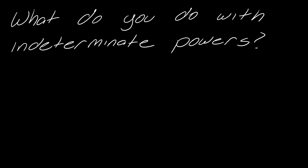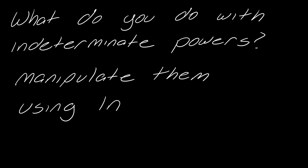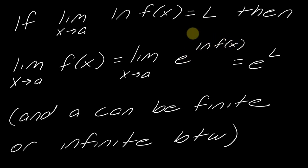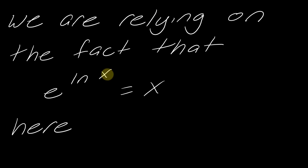For indeterminate powers, you must manipulate using the natural log. The idea is: if the limit as x approaches a of f(x) is L taken after applying ln, then the actual limit of f(x) is found by taking e^L, because e^(ln f(x)) = f(x). So we make this manipulation, find the inner limit L, and then ultimately take e to that limit — whether finite or infinite. This relies on the property that e^(ln x) = x.